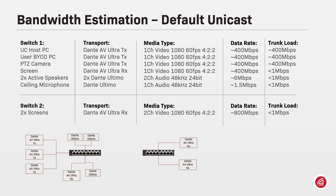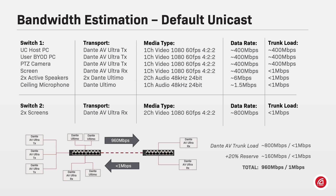Now, let's take the maximum data rate of two unicast video flows required by the two Dante AV Ultra receivers on switch 2. A maximum of 800 megabits per second of Dante AV packets would be loading the trunk line. As an engineering principle to design AV systems, we must add 20% reserve to that bandwidth to account for possible peaks and other high traffic moments on the network. Summing it all, we get a result of 960 megabits per second to safely transport the two video flows coming from switch 1 to switch 2.